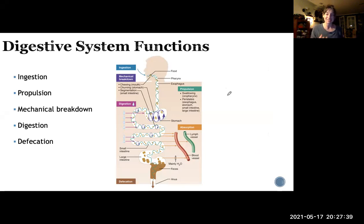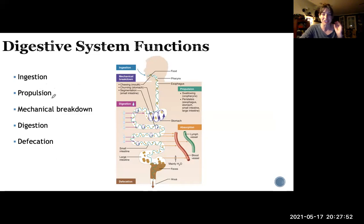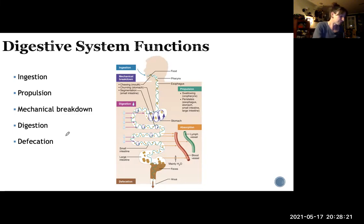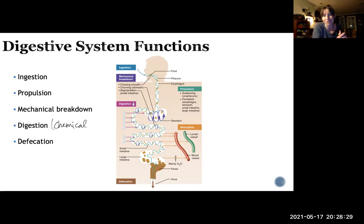Of course you're going to be taking nutrients and excreting waste, but the actual components of these processes include: ingestion — taking food from outside and putting it into your body; propulsion, which is those peristaltic contractions; mechanical breakdown of food, which is physically squishing and breaking it down in your mouth and stomach; the actual digestion, which is the chemical breakdown of foods using enzymes, acids, or other substances; and finally defecation or excretion.